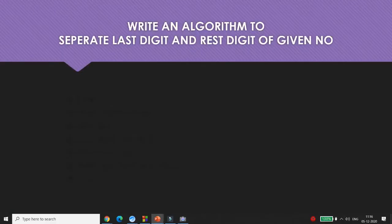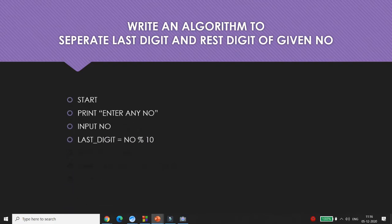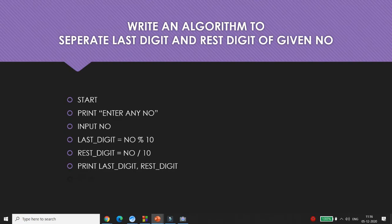How do we implement this in an algorithm? Simple — start, get the number from the user. If you want the last digit, write number % 10. If you want the rest of the digits, write number / 10. Then print both: last digit and rest digit.